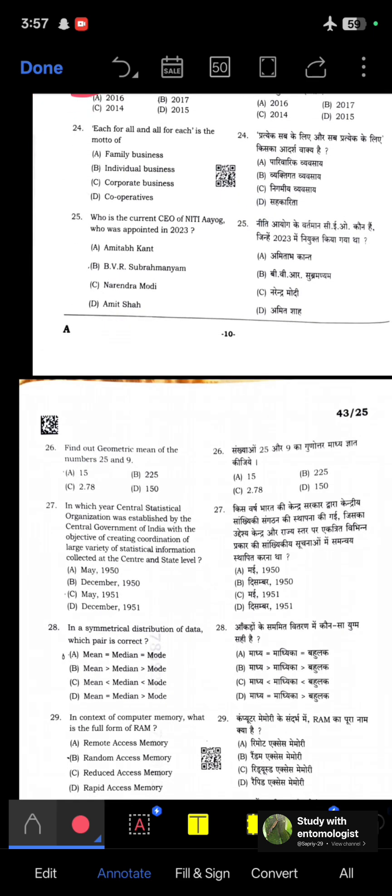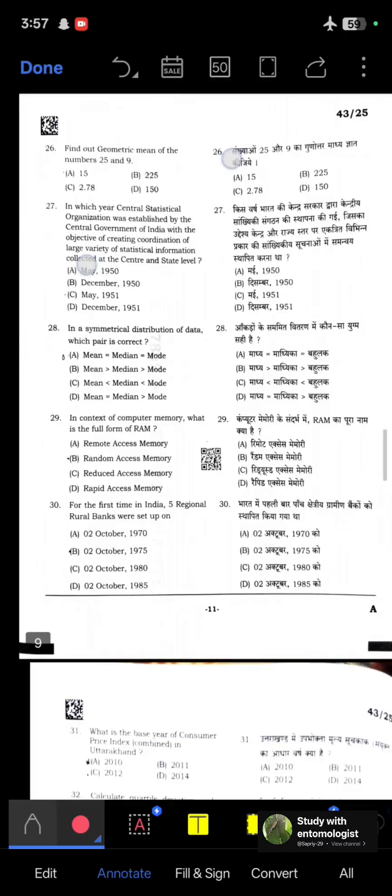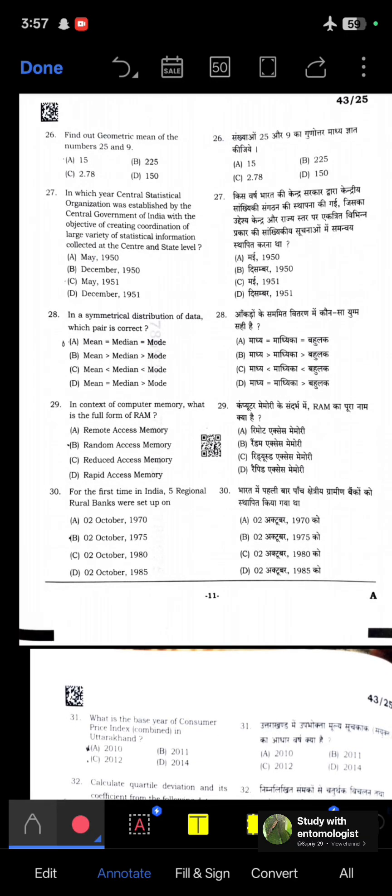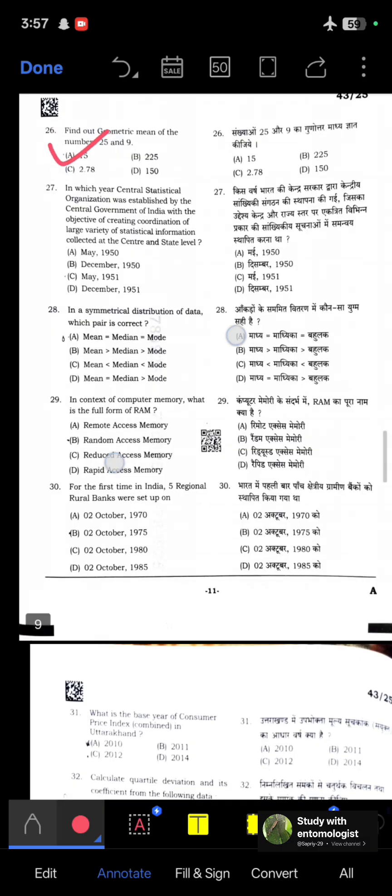Each for all and all for each is the motto of cooperatives. Who is the current CEO of NITI Aayog, appointed in 2023? BVR Subrahmanyam. Find out the geometric mean of the numbers 25 and 9. If you calculate the geometric mean, it will come to 15.